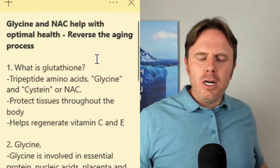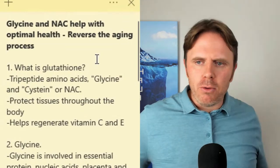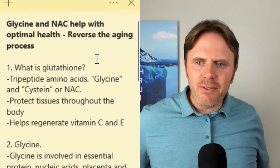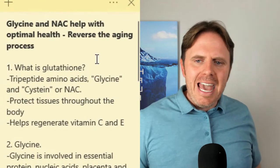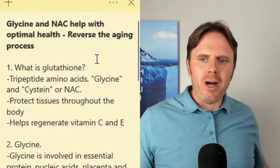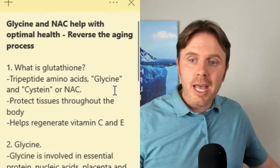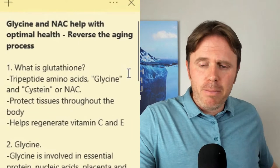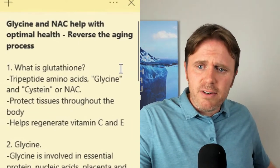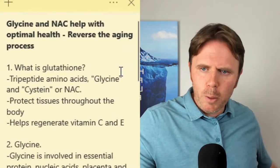Glutathione is a tripeptide: cysteine, glutamine, glycine. Cysteine tends to be the more rate-limiting amino acid to bump up glutathione. Cysteine is found in nuts, seeds, eggs, meat, and things like that. N-acetyl is just an N-acetyl group attached to cysteine, which helps with the absorption. Your body cleaves that N-acetyl off and then you're left with cysteine.